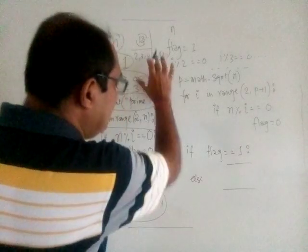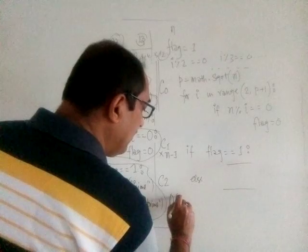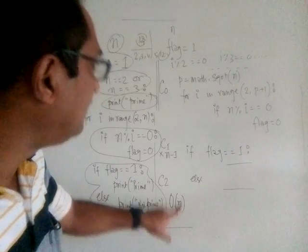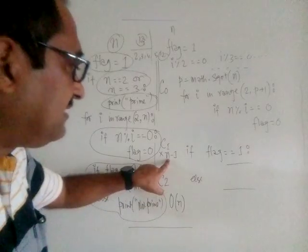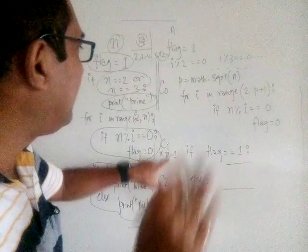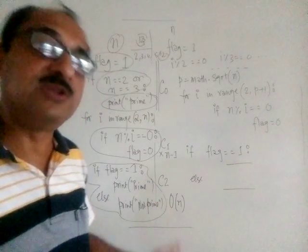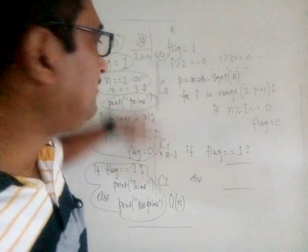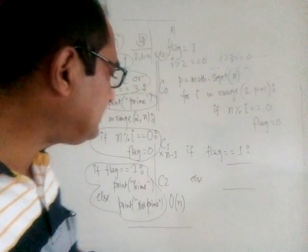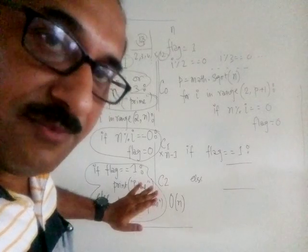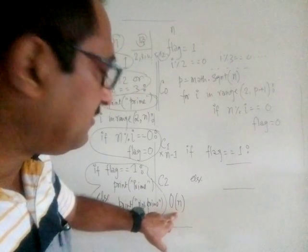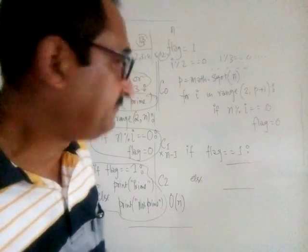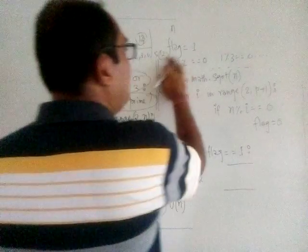So if we write it all out, it becomes c0 plus c1 into (n minus 1) plus c2. As a whole this can be approximately written as O(n), because it is mainly depending on n. If n increases, the time increases. c0 and c2 will remain the same regardless of n, so as n increases this time keeps increasing. Therefore, this way of checking if a number is prime takes O(n) — a maximum of n steps.